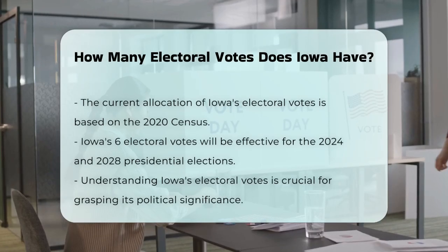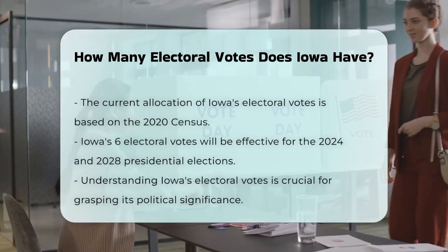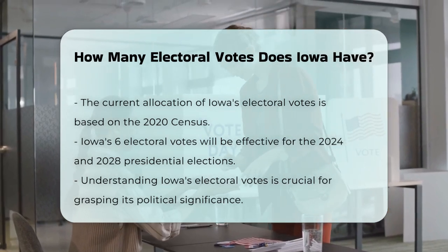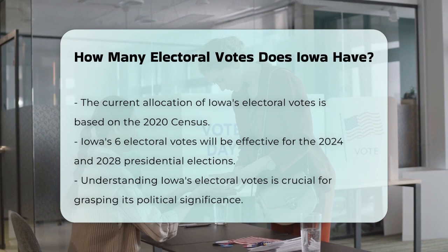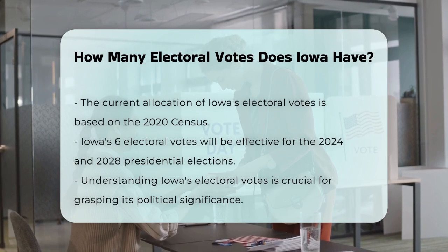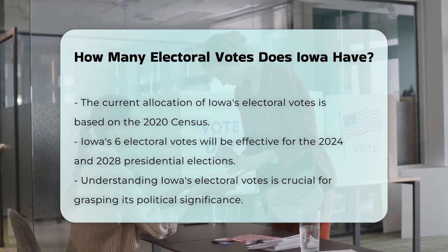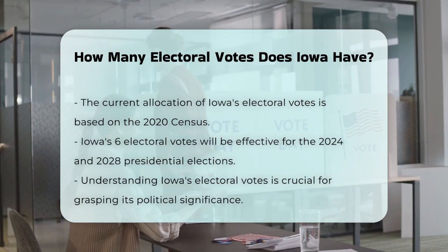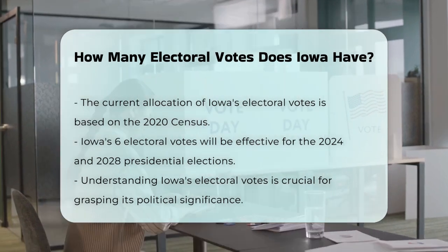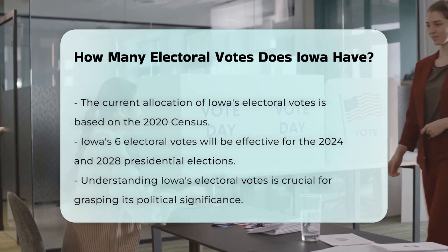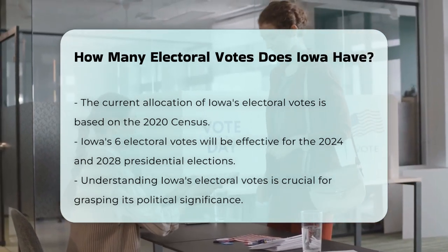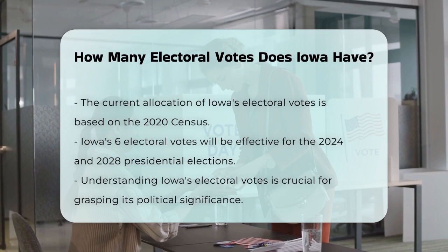This gives Iowa an outsized role in shaping the early stages of presidential elections. The current allocation of six electoral votes for Iowa is based on the 2020 census and will be effective for the 2024 and 2028 presidential elections. In summary, Iowa has a total of six electoral votes, a number derived from its two senators and four representatives in Congress.